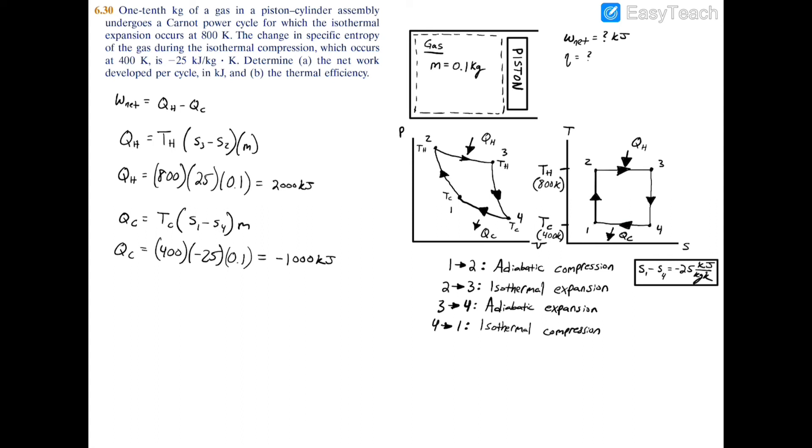W_net = 2000 kJ minus... here's where you might get confused. Do you subtract by -1000 or by 1000? Technically, the network is the summation of all heat transfers.